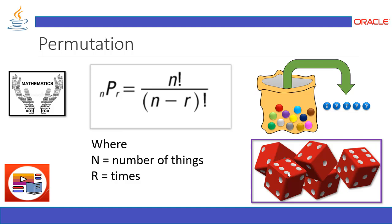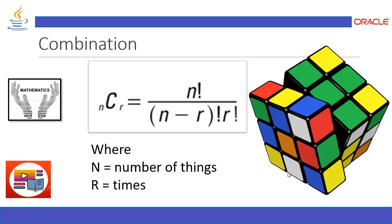Now let's learn about combination. Combination is just like permutation — it is the different ways of selecting elements if the elements are taken one at a time, some at a time, or all at a time. Together, permutation and combination are part of combinatorics, where we arrange elements and study the analysis of possibilities. The formula for combination is: factorial(n) divided by factorial(n minus r) multiplied by factorial(r), where n is the number of things and r is the number of times of the event.